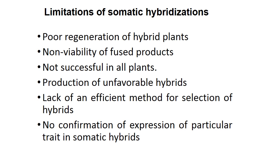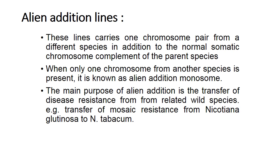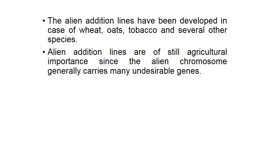The alien addition line carries one chromosome pair from a different species in addition to the normal somatic chromosome complement of the parent species. When only one chromosome from another species is present, it is an alien addition monosome. The main purpose is transfer of disease resistance from related wild species, for example, transfer of mosaic resistance from Nicotiana glutinosa to Nicotiana tabacum. Alien addition lines have been developed in wheat, oats, tobacco, and several other species, but are not agriculturally ideal since the alien chromosome generally carries many undesirable genes.